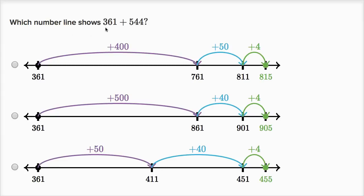Which number line shows 361 plus 544? In all of them we're starting at 361. So now let's add 544.